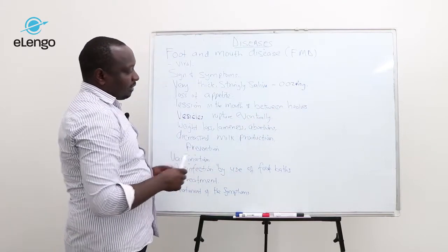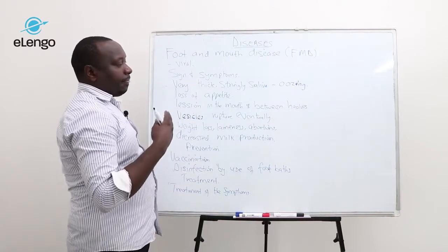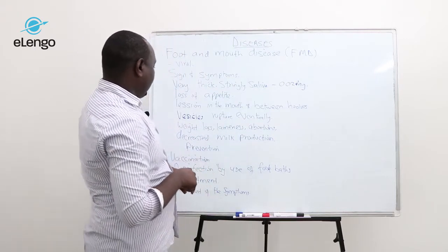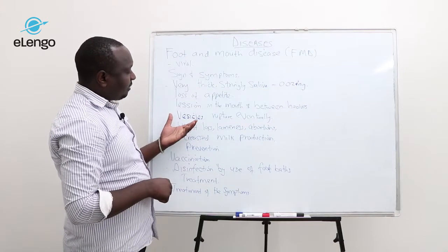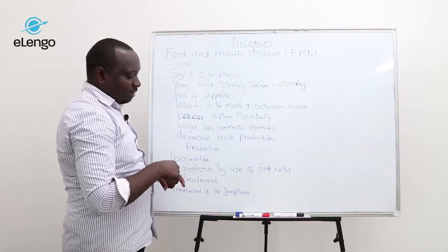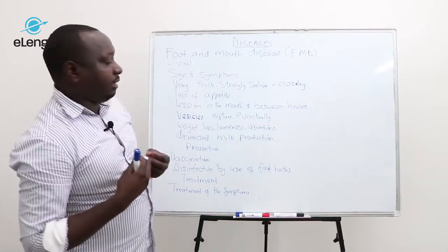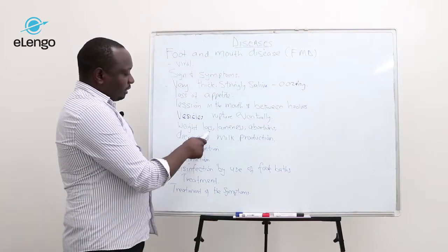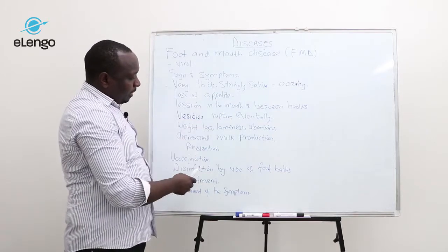In the mouth, these are found on the lips and tongue. These particular wounds or lesions, the vesicles, rupture eventually, and the animal loses weight as a result of loss of appetite.